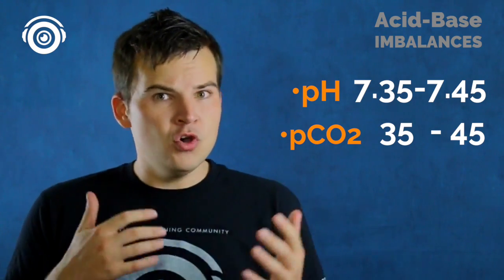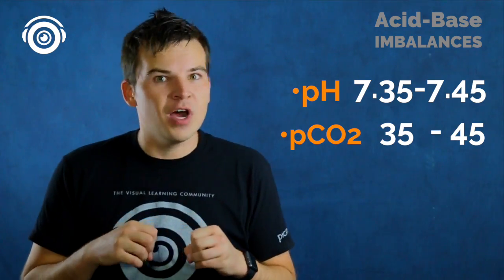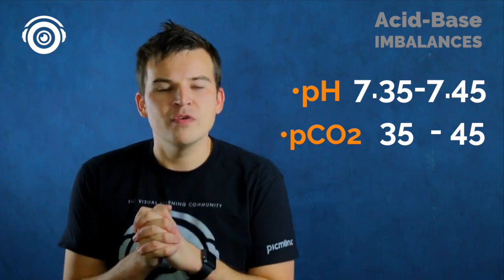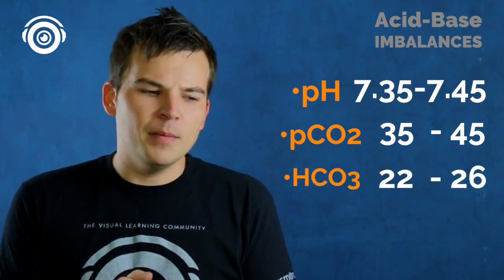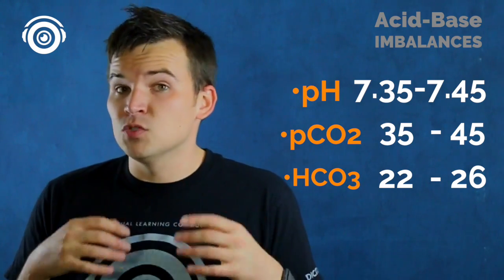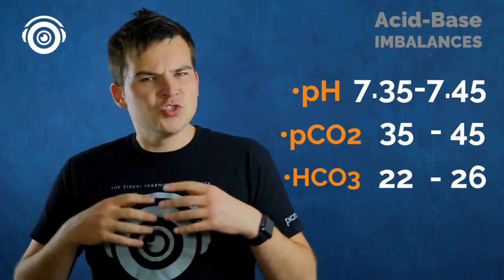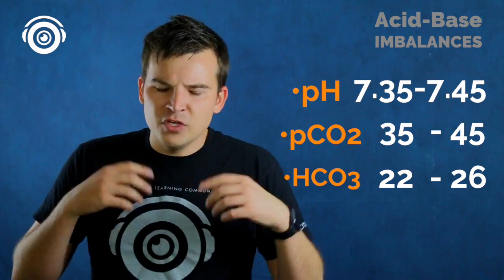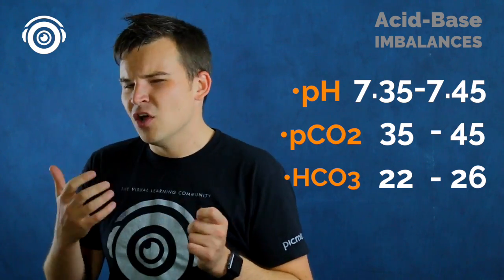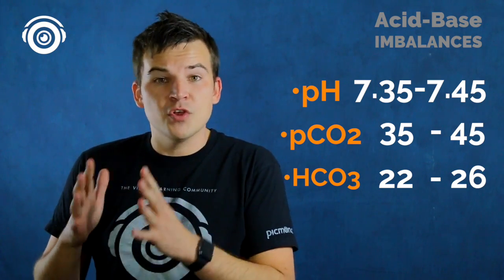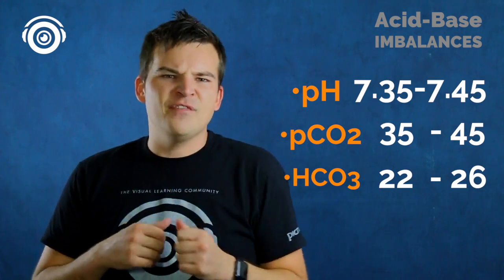How do we remove and regulate CO2 in our body? We blow it off — literally blowing off some acid. Bicarb is 22 to 26. Remember, bicarb is regulated by the kidneys and it's slow to react. You can huff and puff and blow off CO2 really fast, but it takes a long time — sometimes 24 hours — for your kidneys to begin compensating.